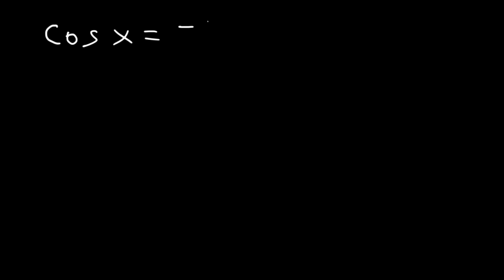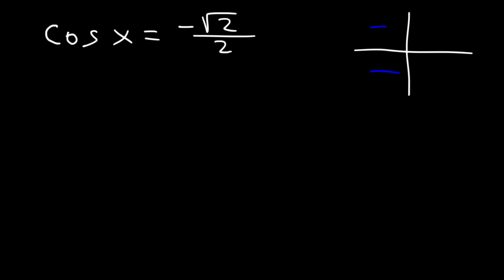Let's work on another example. Let's say cosine x is equal to negative √2/2. Find all answers that satisfy this equation. Cosine of what angle is equal to negative √2/2? Keep in mind cosine is negative in quadrants 2 and 3, and you need to know the reference angle.